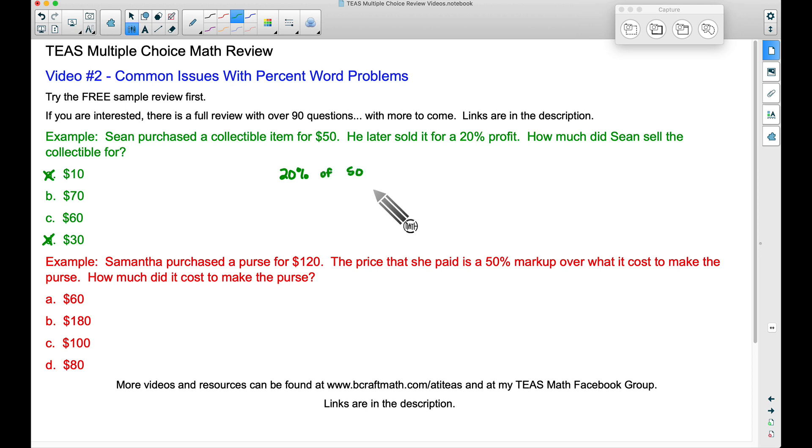Now we can do a proportion here if we wanted to but I'm going to stick to speed techniques because the TEAS test is timed. And if we find 20% of $50 that's the same thing as taking 0.2.